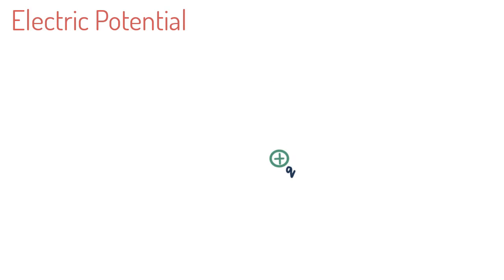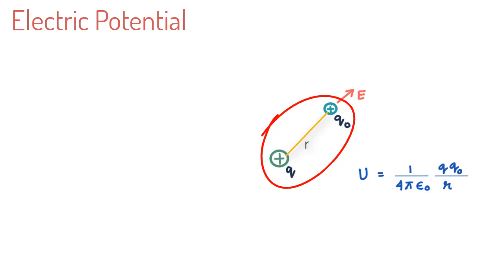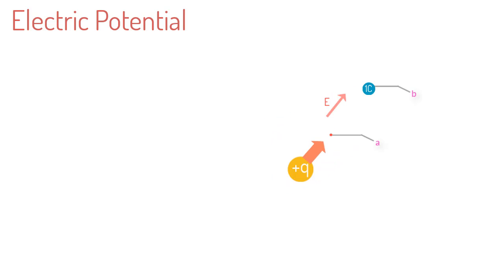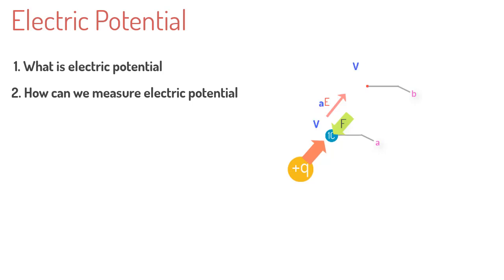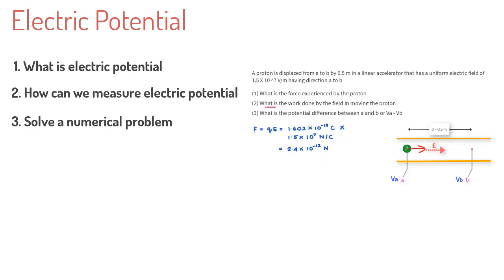In the previous lesson we learned that any charge Q0 placed in an electric field produced by another charge Q has certain potential energy associated with it, or more accurately associated with the system of charges Q and Q0. In this lesson we will learn: what really is electric potential, how can we measure electric potential, and finally solve a problem to strengthen our understanding.